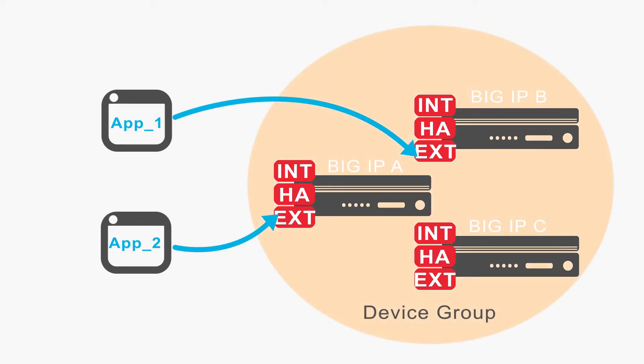Now we see the same three devices, but in a sync failover device group. If a device goes down, its traffic flow automatically targets another device. In our example, the application flow for App 2 goes from BIG-IP-A to BIG-IP-C.